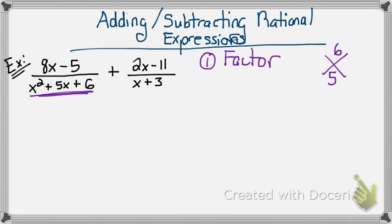The two numbers that work obviously are 3 and 2. So if I write it out in factored form, it would be x plus 3 and x plus 2. And I'll just rewrite my numerator because I didn't do anything to it.